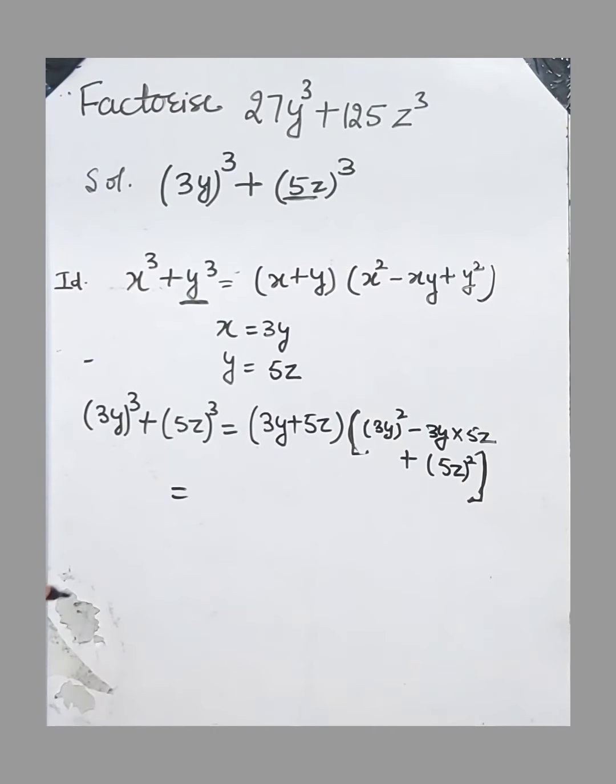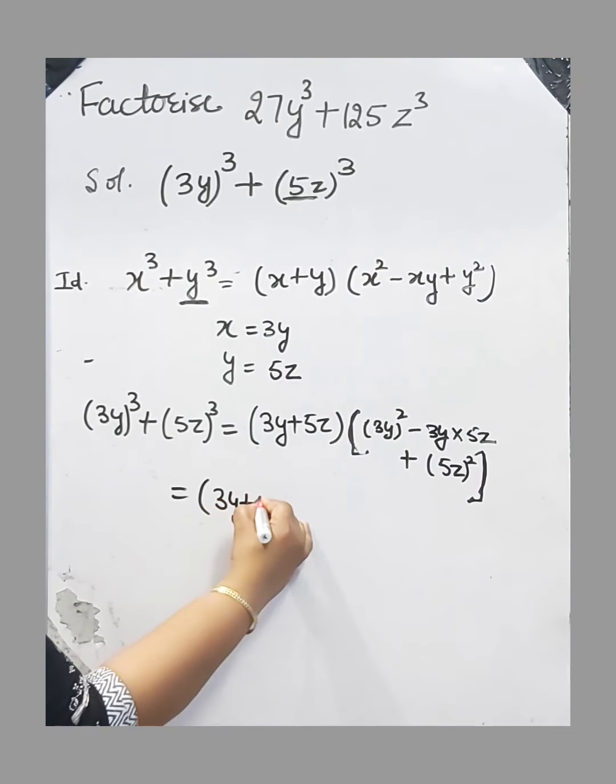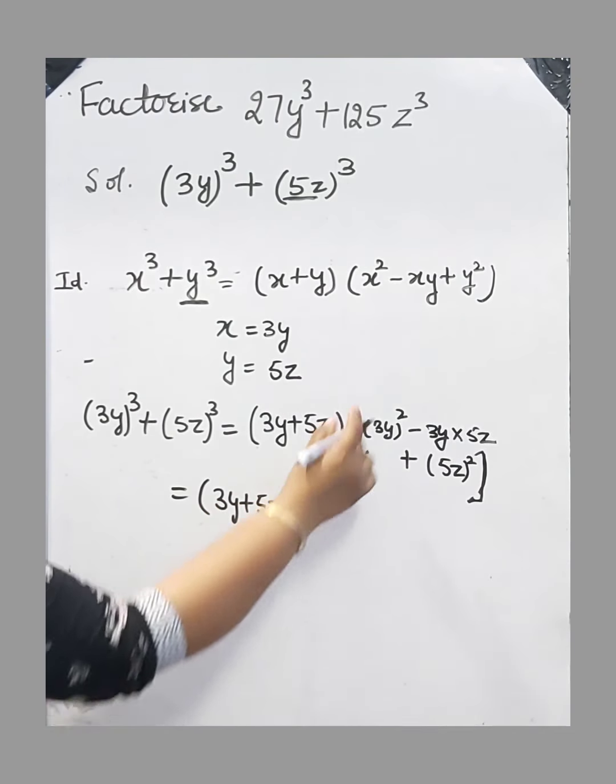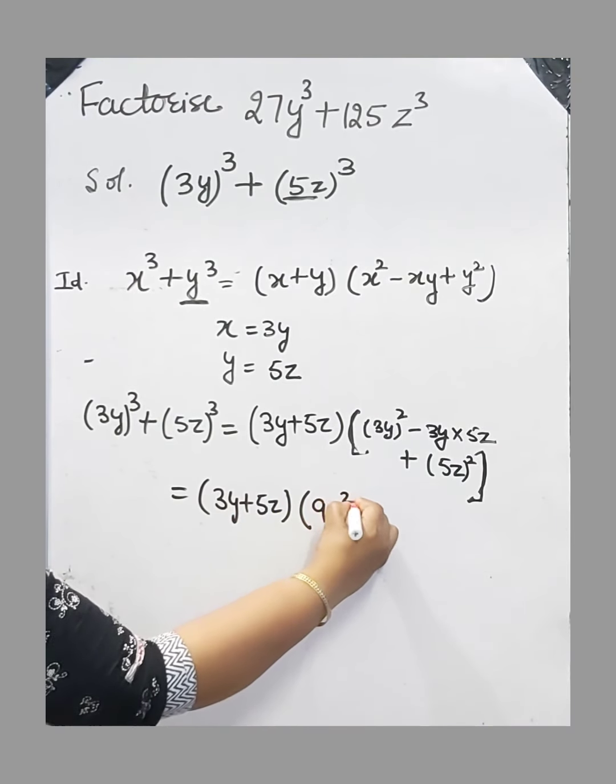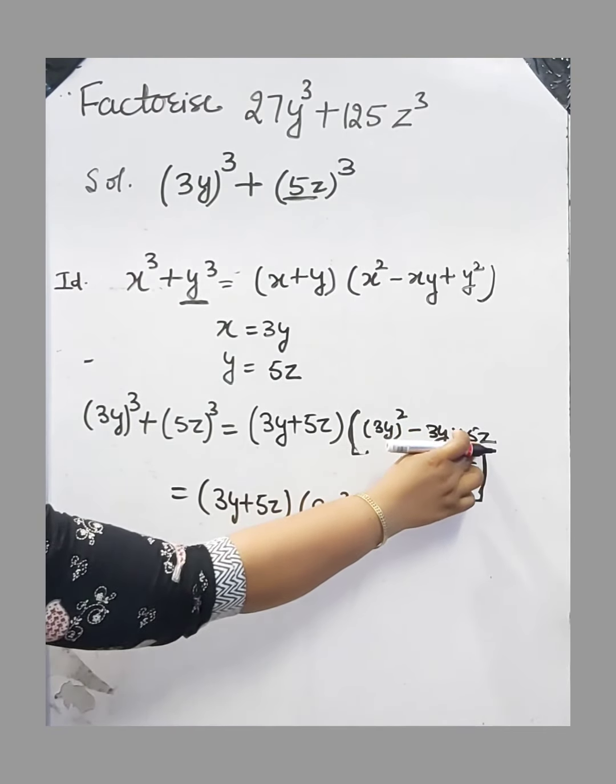Now simplify the right-hand side. 3y plus 5z. Next, (3y)² equals 9y².